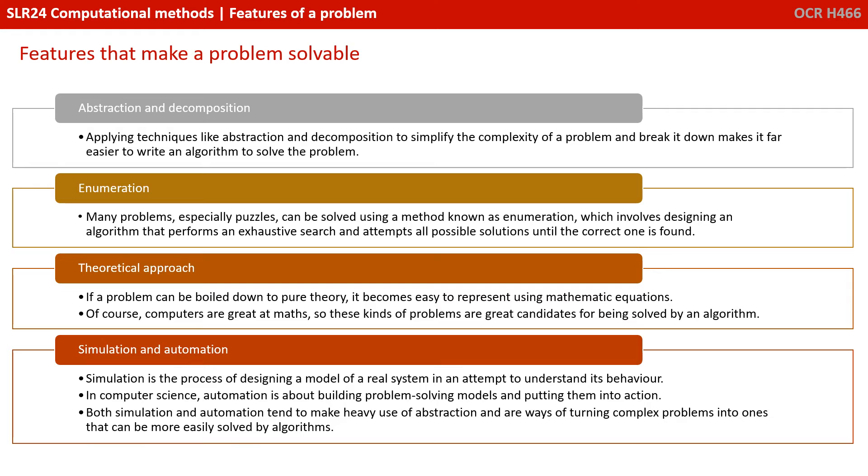Simulation and automation: simulation is the process of designing a model of a real system in an attempt to understand its behavior. In computer science, automation is about building a problem-solving model and putting it into action. Both these techniques tend to make heavy use of abstraction and are ways of turning complex problems into ones that can more easily be solved by algorithms.